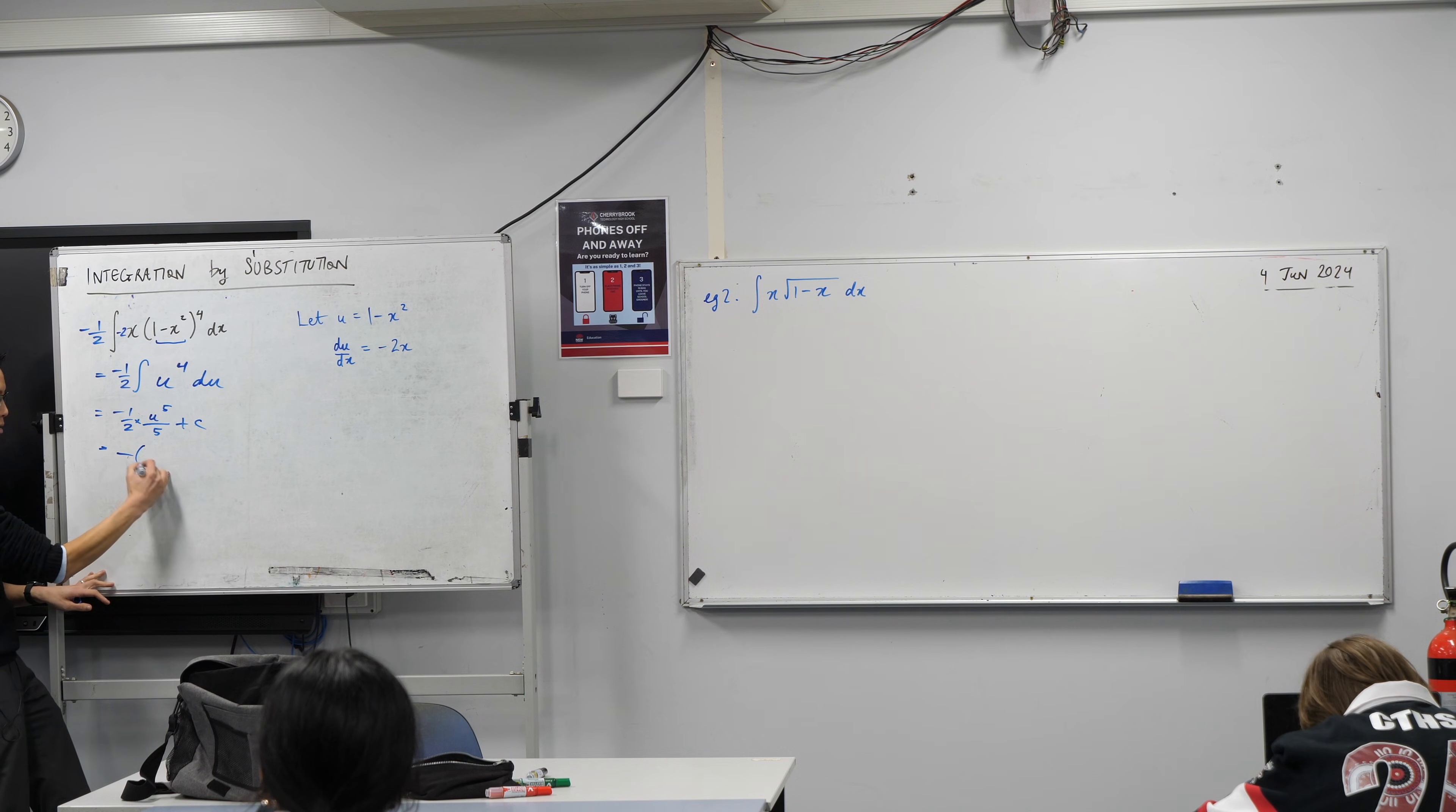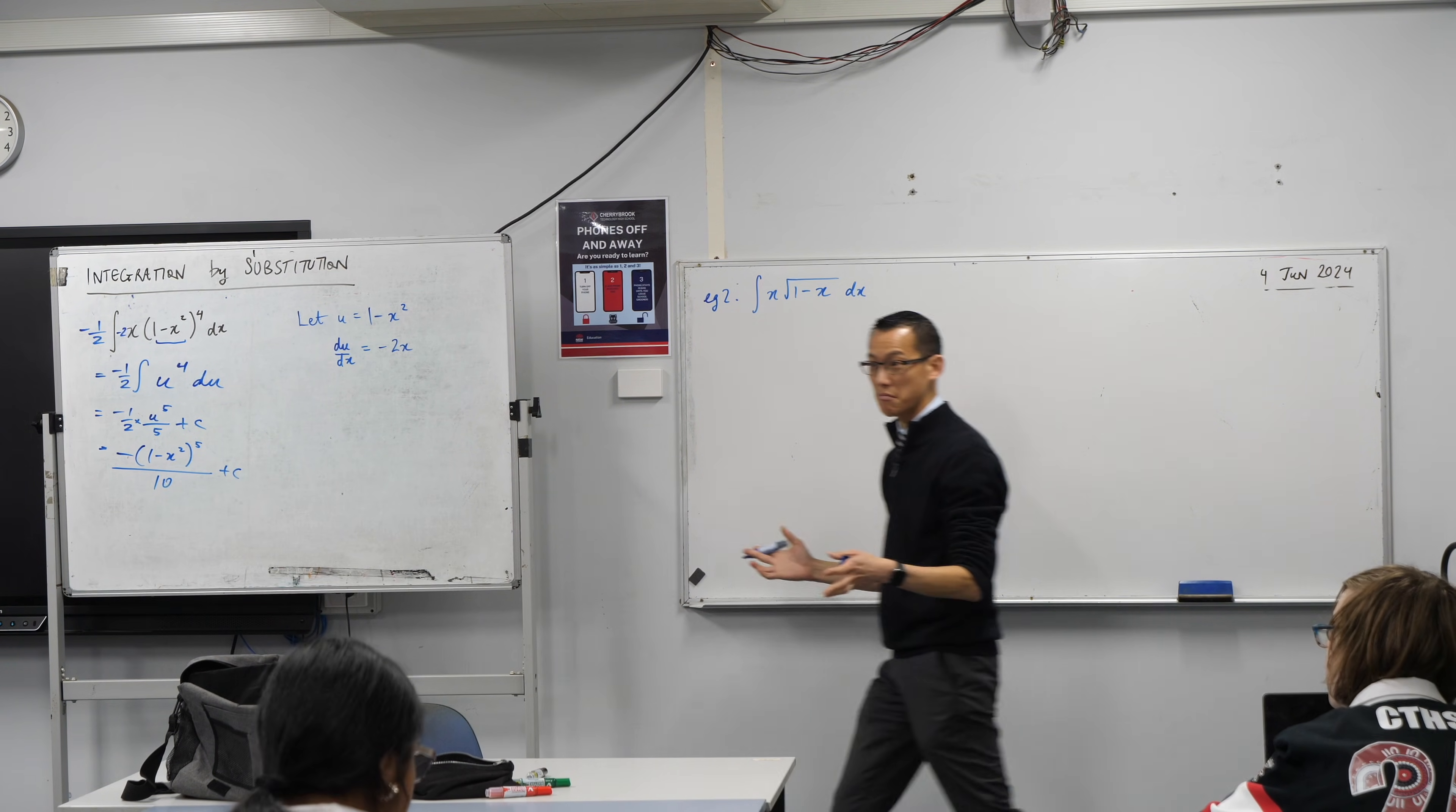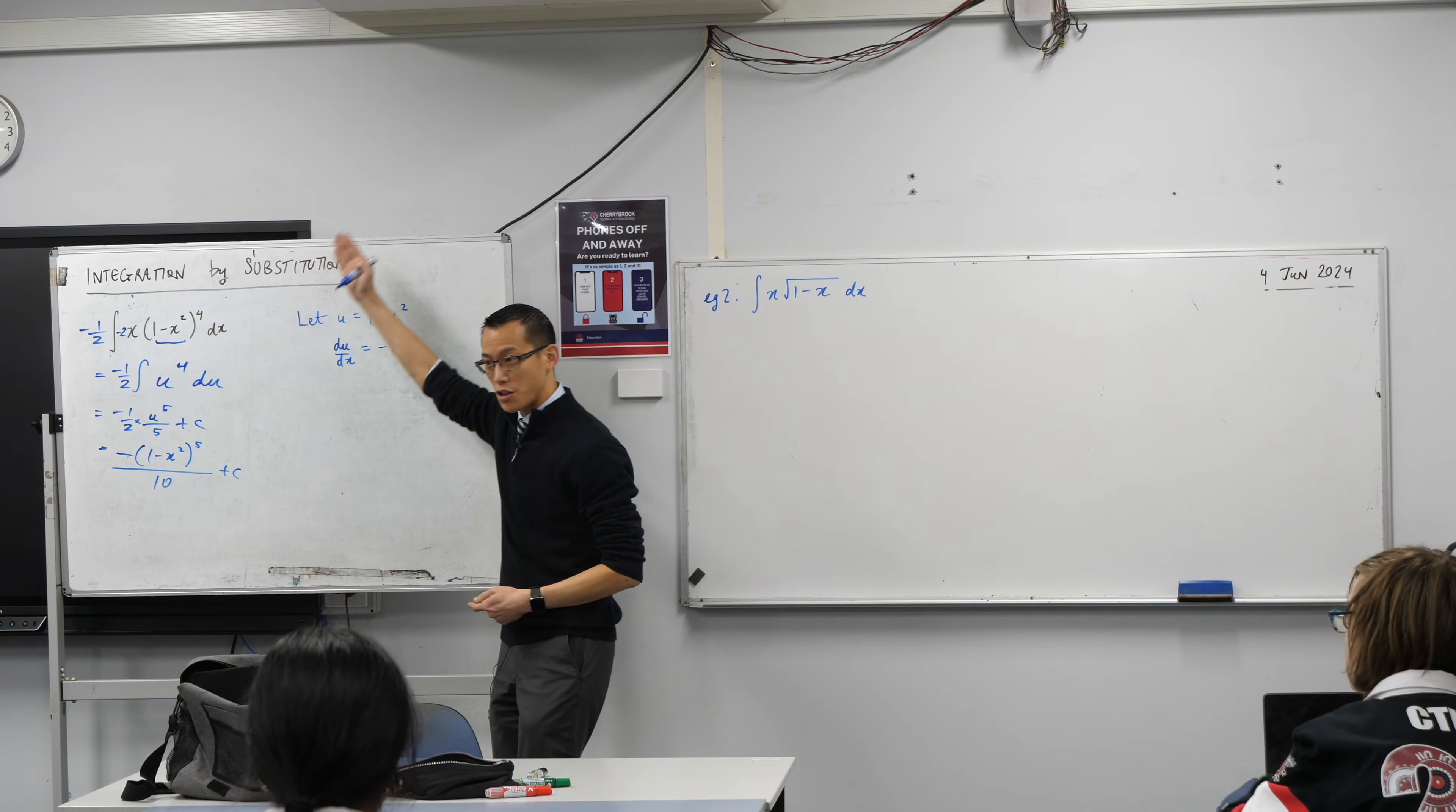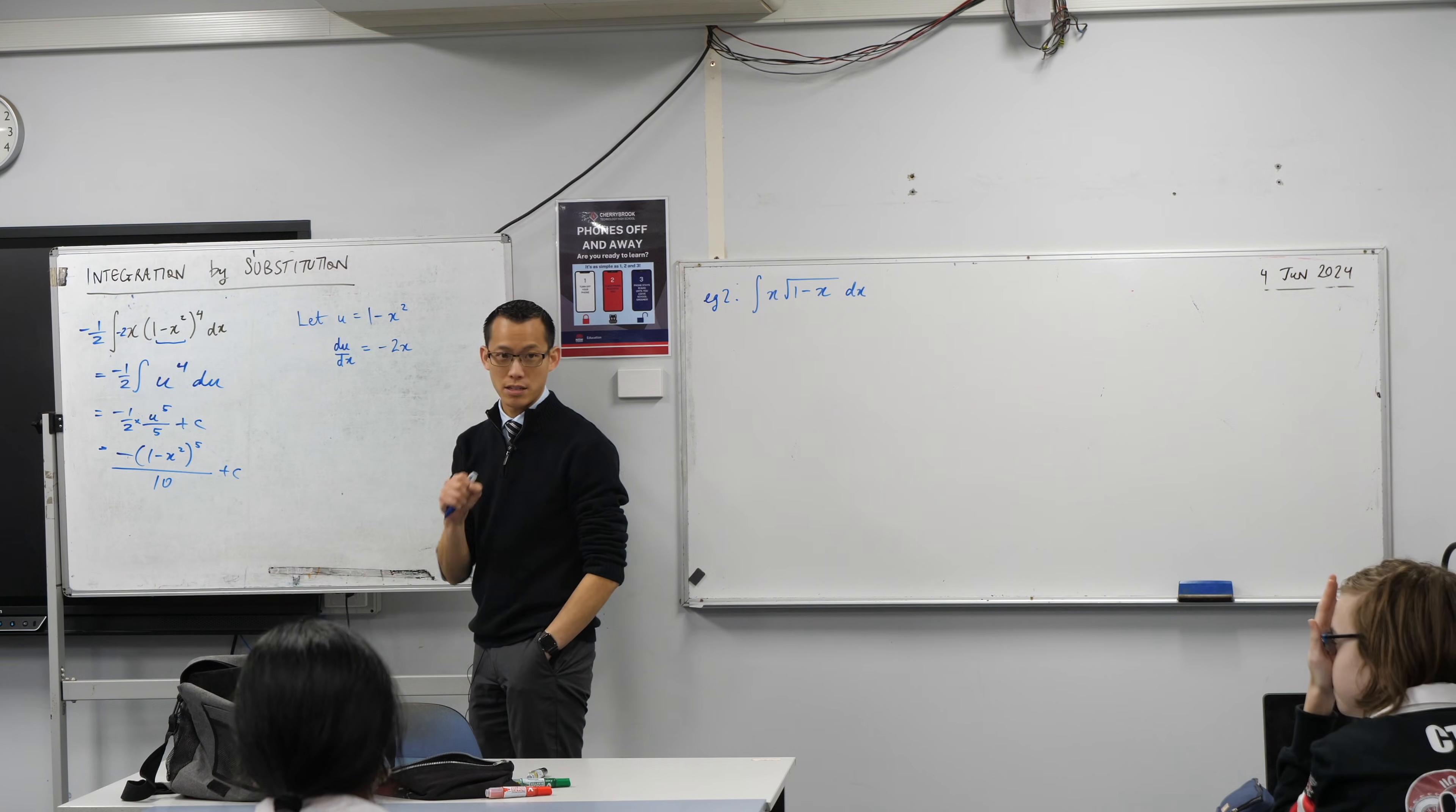So, I've got a minus there, (1 - x²), all to the power of 5. And then, you divide. How does that look? You happy with that? Okay. This is not too complicated. This is what you would call your stock standard simplest kind of integration by substitution.